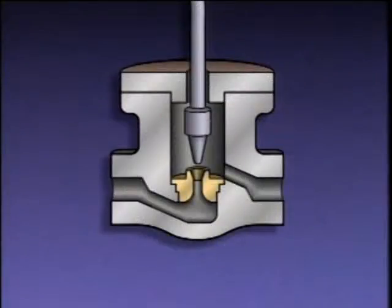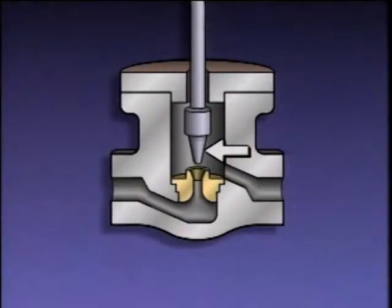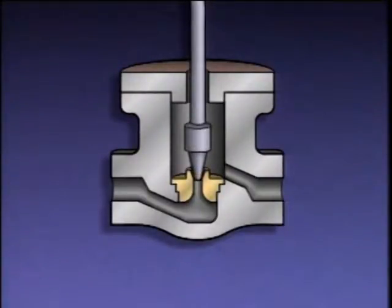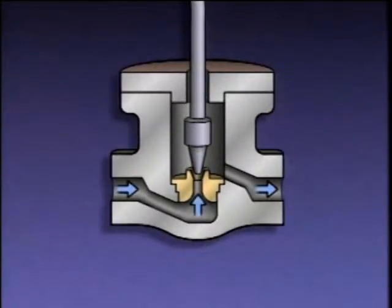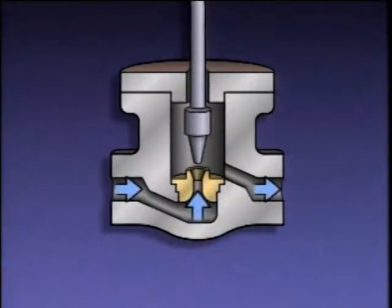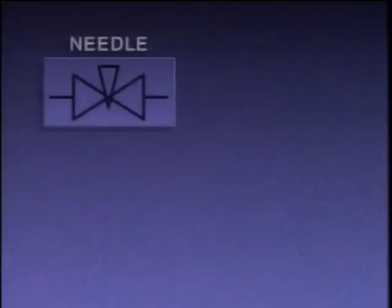A needle valve has basically the same parts as other globe valves, but its disc is shaped like a needle that extends deep into the seating area. A small movement of the stem causes a small, gradual change in the flow rate, giving the needle valve an extremely fine throttling ability. On a piping system diagram, a needle valve generally looks like a specific symbol.